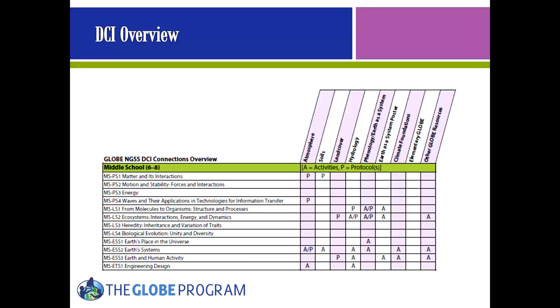These tables were received very positively in the public review, with several reviewers stating that this is where they would start in the search for how to implement NGSS through Globe. One reviewer said this is all the detail that she would need — tell her which investigation area to concentrate on and she would pick the individual activities and protocols to use with her class. However, most reviewers wanted this and student performance expectation level matches.